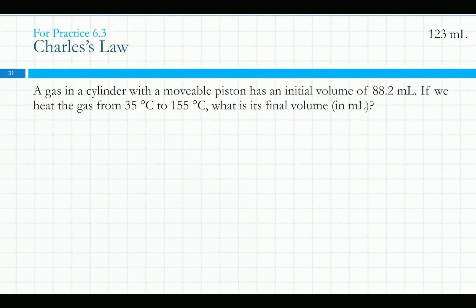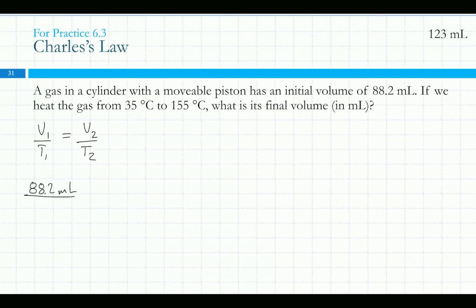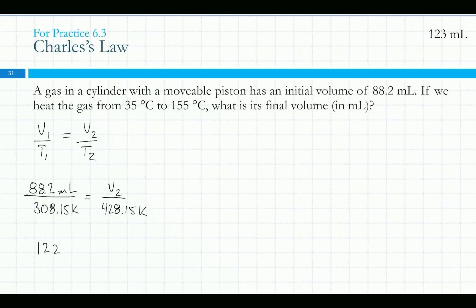A gas in a cylinder with a movable piston has an initial volume of 88.2 milliliters. If we heat the gas from 35 degrees C to 155 degrees C, what is its final volume in milliliters? Using Charles' Law, we just plug in our initial and final values. Initial volume is 88.2 over 35 plus 273.15 Kelvin equals V2 over 155 plus 273.15 Kelvin. So 88.2 divided by 308.15 times 428.15 — the new final volume is 122.5, which rounds to 123 milliliters.